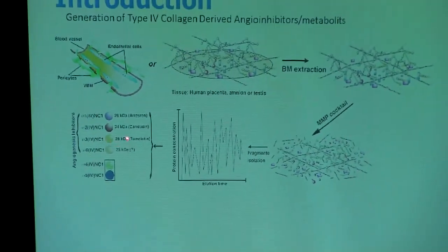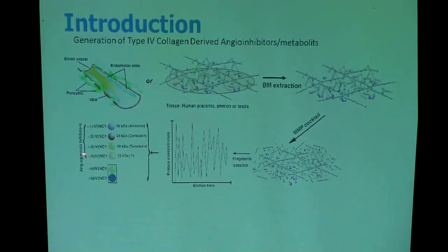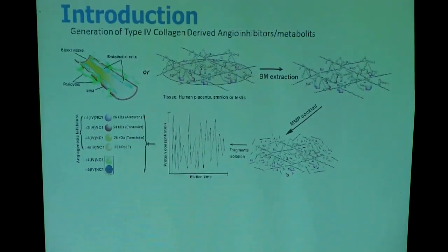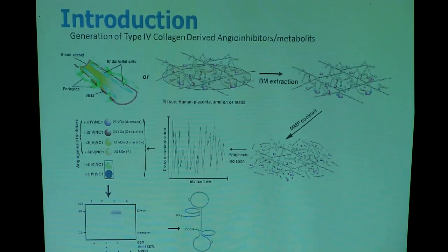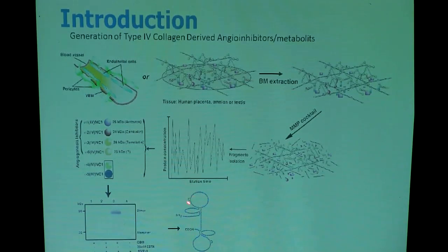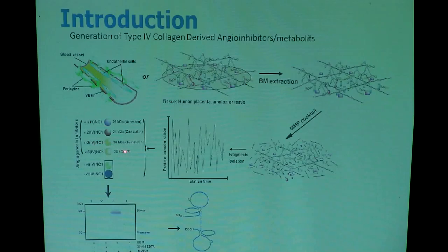Now I'm going to talk about the alpha-6 domain. An antibody recognized that domain. That is the structure of the NC1 domain — N-terminal loop, globular, and C-terminal globular. Both these globular domains have anti-angiogenic activity. We tested alpha-1, alpha-3, and alpha-6 as well.